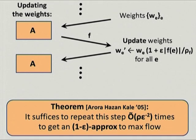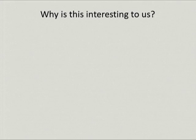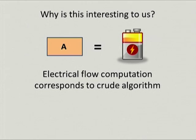Making this argument precise gives a very simple but beautiful proof: after roughly rho over epsilon-squared iterations, you recover a 1 minus epsilon approximation to the maximum flow problem. Here rho is the width of the oracle—the largest overflow ever encountered. Electrical flow computation corresponds exactly to the crude algorithm we need here, so we use these multiplicative weight update ideas to fill our template: we run rho over epsilon-squared iterations, updating resistances according to the multiplicative weight update rule.